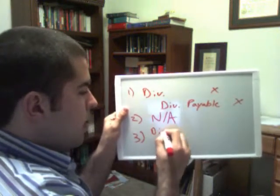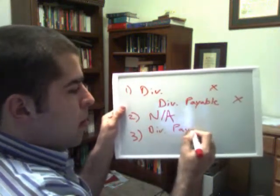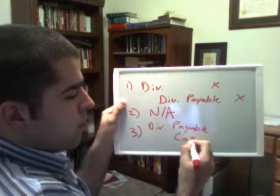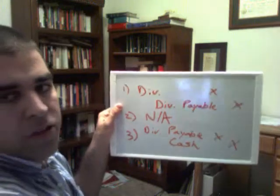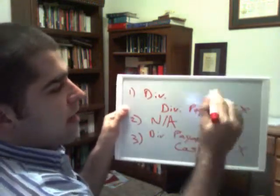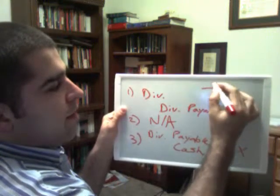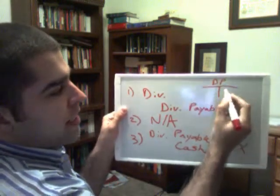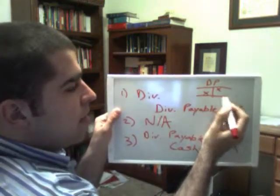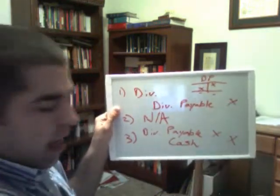Finally, on the date of payment, we take this off the books: dividends payable is debited and cash is credited. Looking at this in T-account form: dividends payable comes in as a liability, and later when we pay it off we debit it, so it should have a zero balance once paid off.